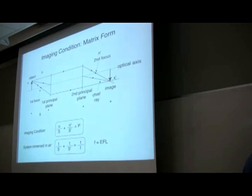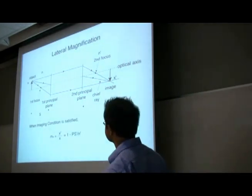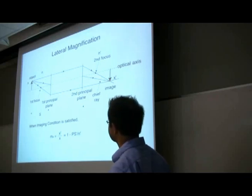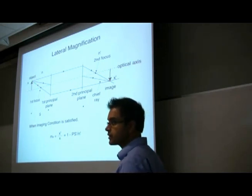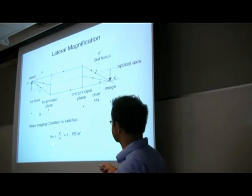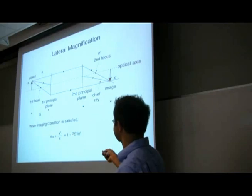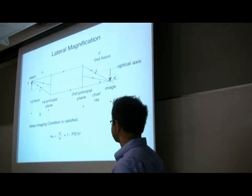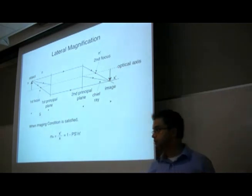Keeping those things in mind, we can define magnification, which is the next important parameter — what is the size of the image with respect to the object? We did this with similar triangles last time. The lateral magnification is just x-prime divided by x, which is 1 minus b·s-prime by n-prime, or just the image distance divided by the object distance.